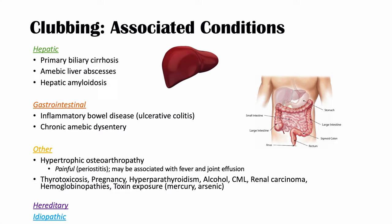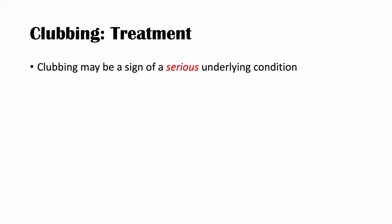Clubbing may be a sign of a serious underlying condition, so it's important to identify and treat the underlying cause. Interestingly, clubbing is often an acquired physical sign and can be reversed after the underlying cause is treated. Hereditary clubbing, however, cannot be reversed. If it's acquired, identifying and treating the cause can actually reverse it.